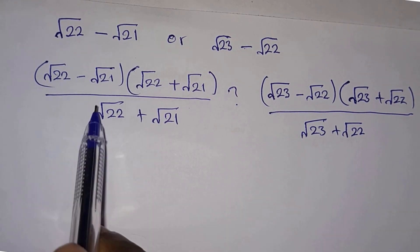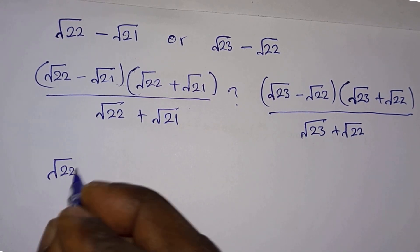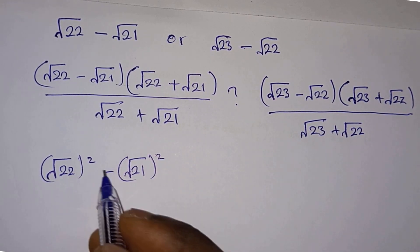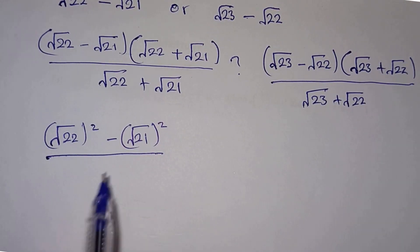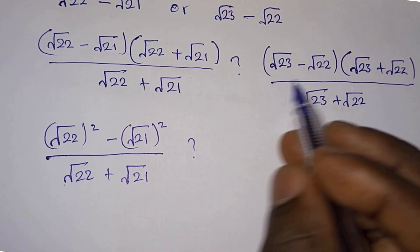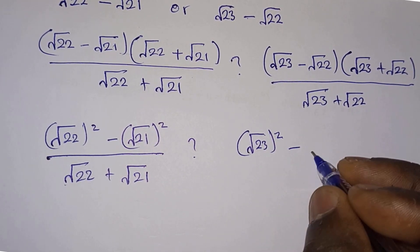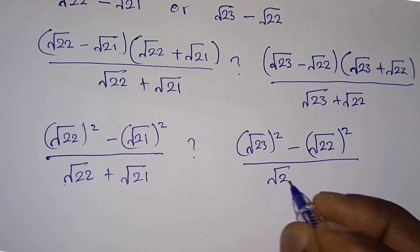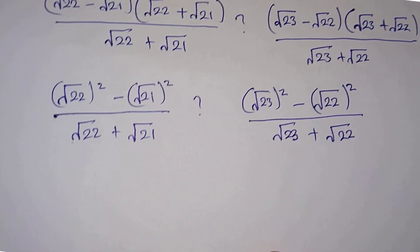Now let's pay attention to the numerators. This is a difference of two squares, so we can write it as (√22)² minus (√21)², divided by √22 plus √21. From here, this is also a difference of two squares, so we write it as (√23)² minus (√22)², all divided by √23 plus √22. And we see that...